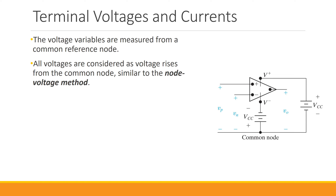The first thing we need to talk about when we want to model or analyze the voltages at terminals of the op-amp is how we can assign the polarities for these voltages. In the figure shown here, we have the op-amp as represented in the previous video. We have the non-inverting input signified with a plus sign, the inverting input with a negative sign, the positive power supply, the negative power supply, and the output terminal.